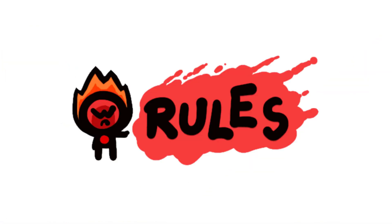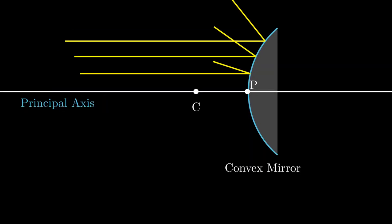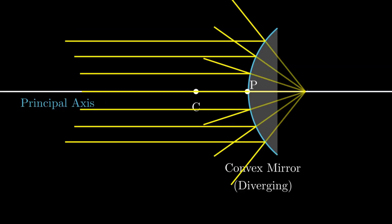When light rays reflect off a spherical mirror, they obey certain rules. For a concave mirror, rays parallel to the principal axis converge to a point known as the focal point, while for a convex mirror, they diverge as if coming from a focal point.